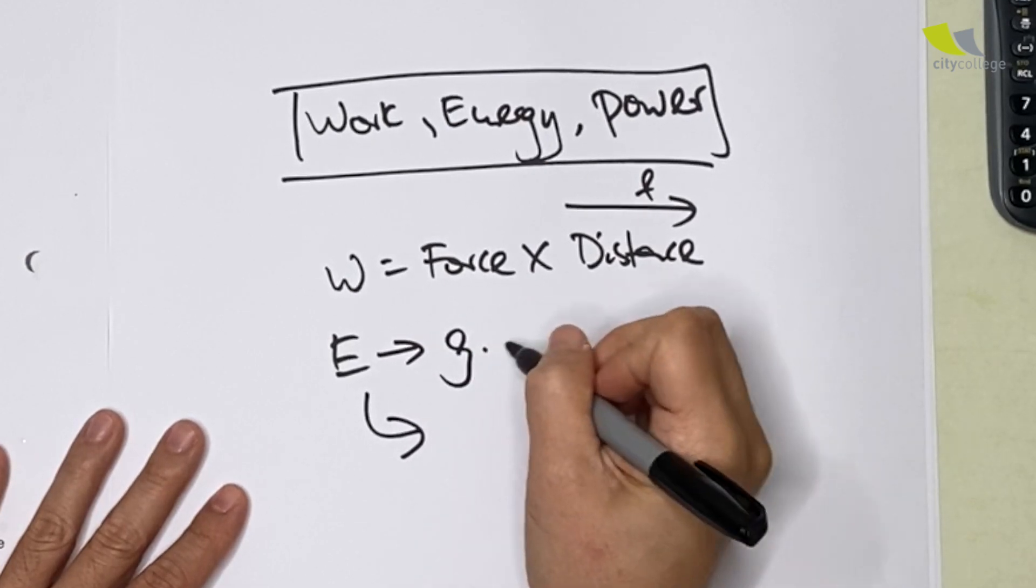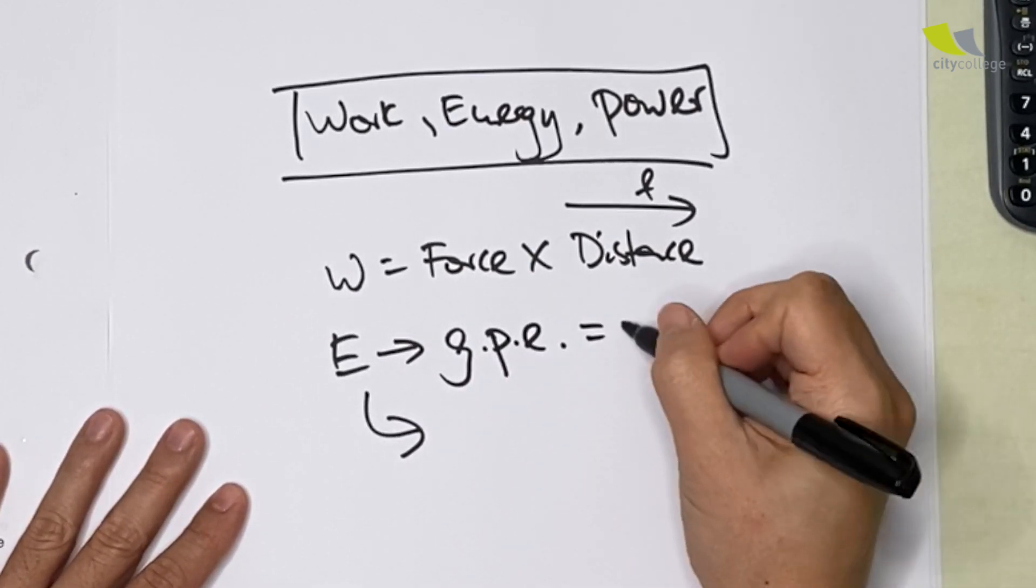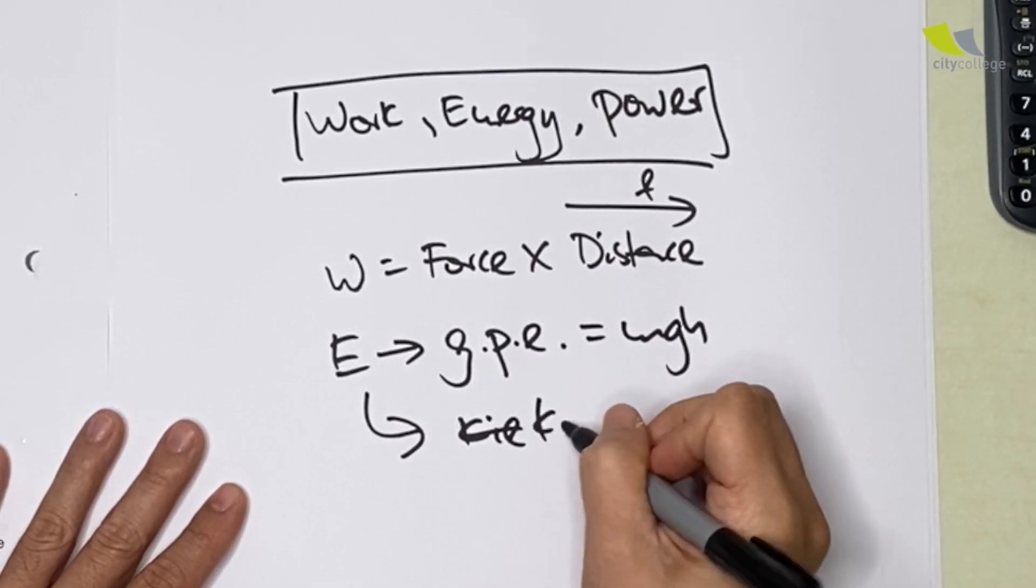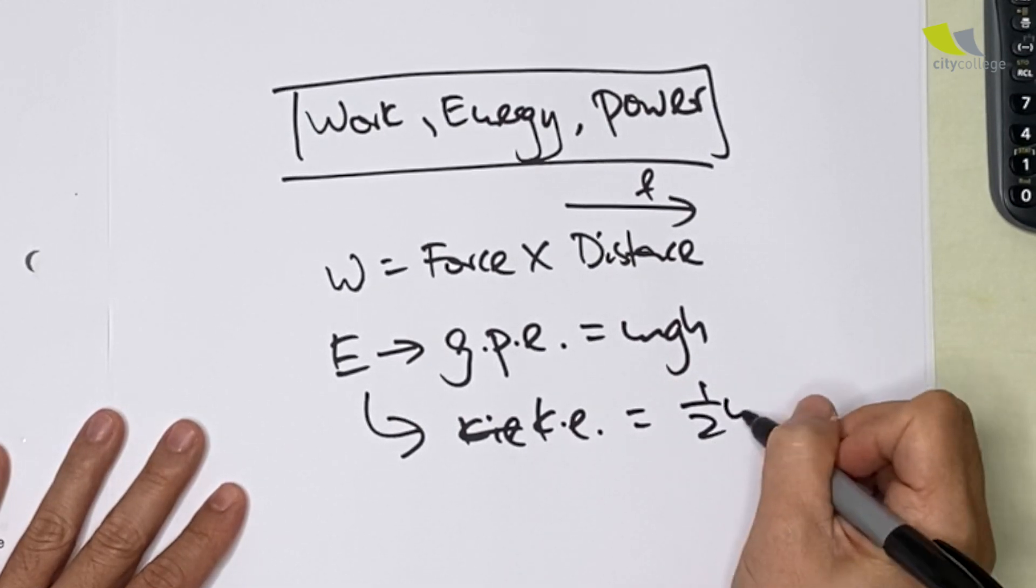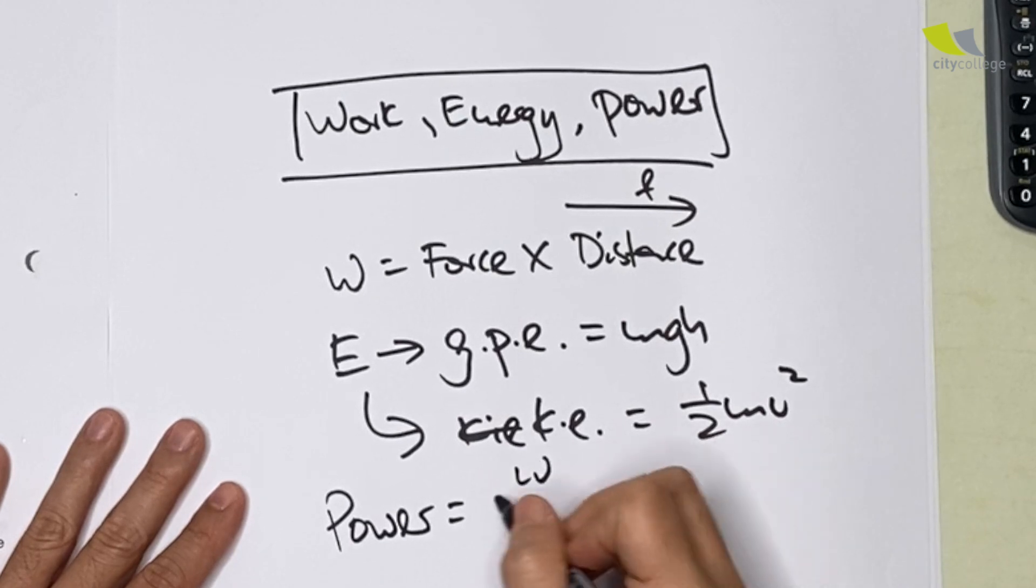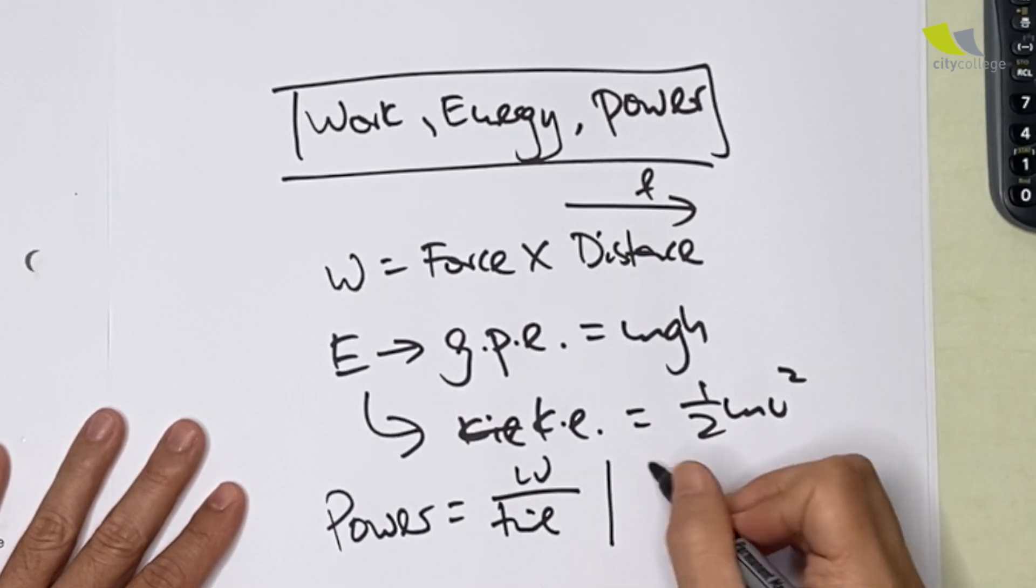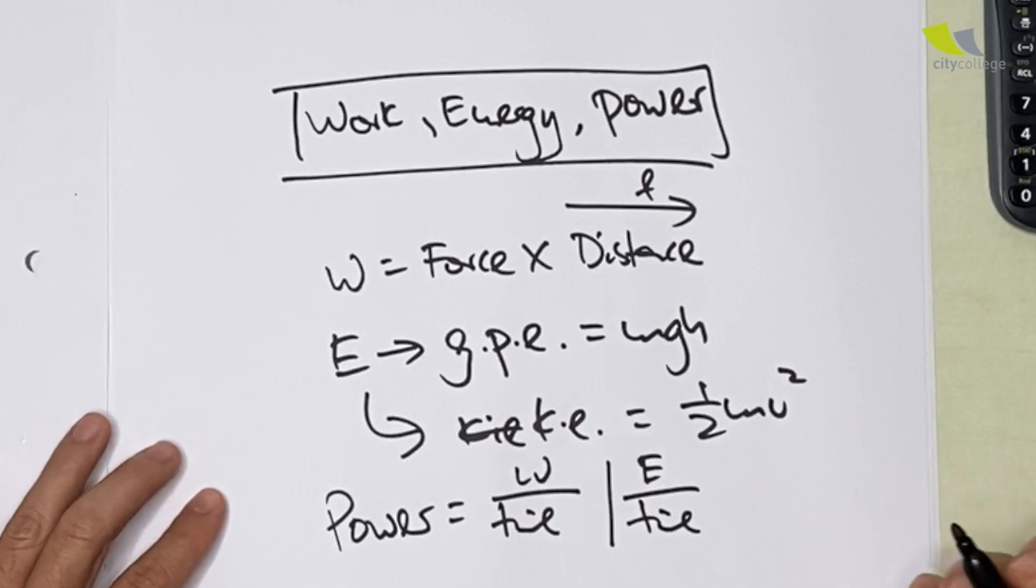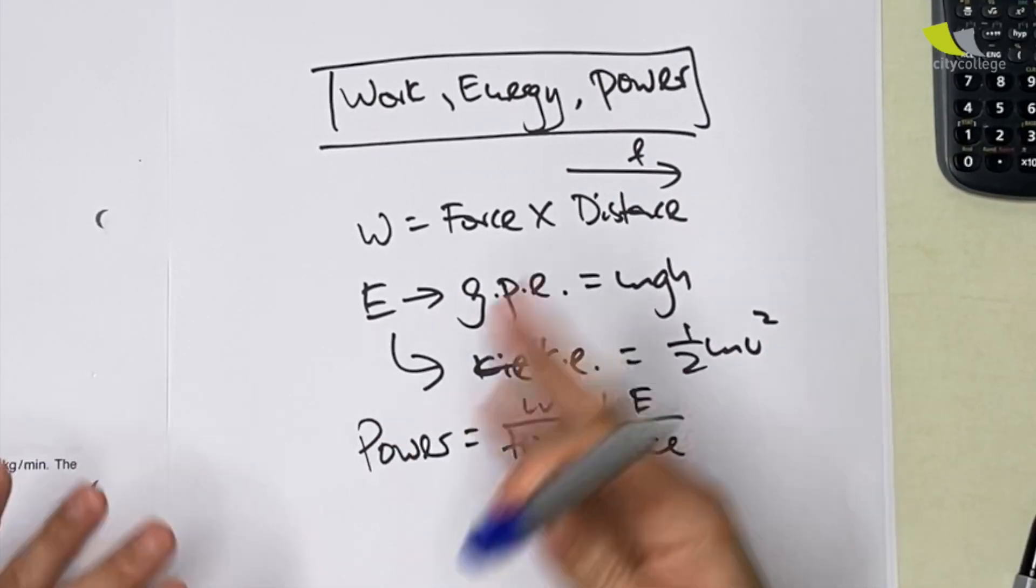Energy: the two types of energy that you need to know is your gravitational potential energy, which is mgh, and kinetic energy, which is half mv squared. Power is equals to either work over time or energy over time.